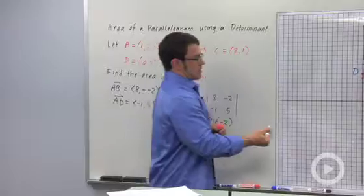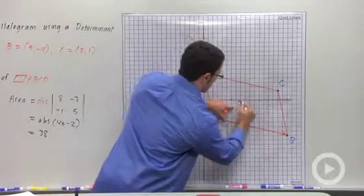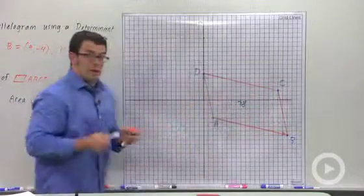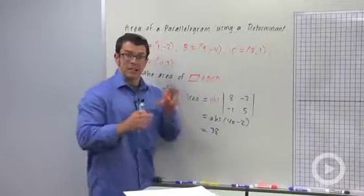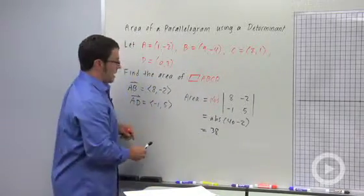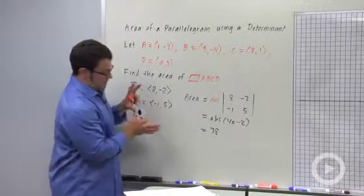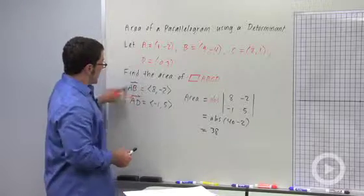And so the area of this parallelogram is 38. So just remember that the procedure is you pick a vertex on the parallelogram, and then that vertex will share two vectors, in this case AB and AD.